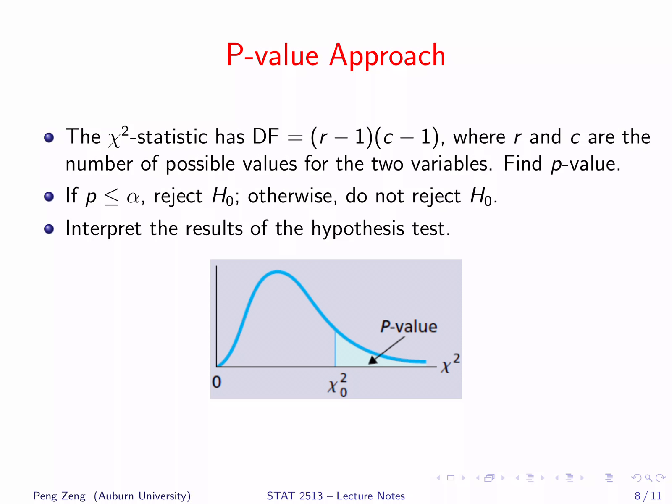When using the p-value approach, the p-value is the probability larger than the test statistic. The degrees of freedom is (R−1) times (C−1), where R and C are the number of possible values for the two variables. If the p-value is less than the significance level alpha, reject H-null; otherwise, do not reject H-null. Lastly, make sure to interpret the result of the hypothesis test.